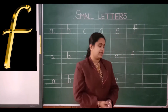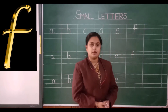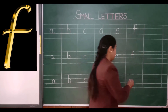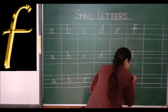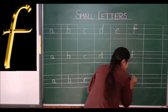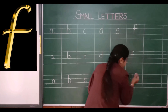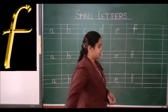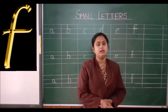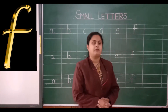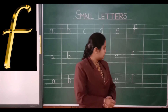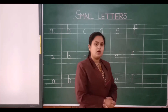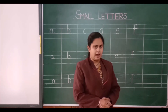Children, once again see here. You have to make a standing line, then a small curve like this and a sleeping line. This is called letter F, F for fish. This is small letter F.